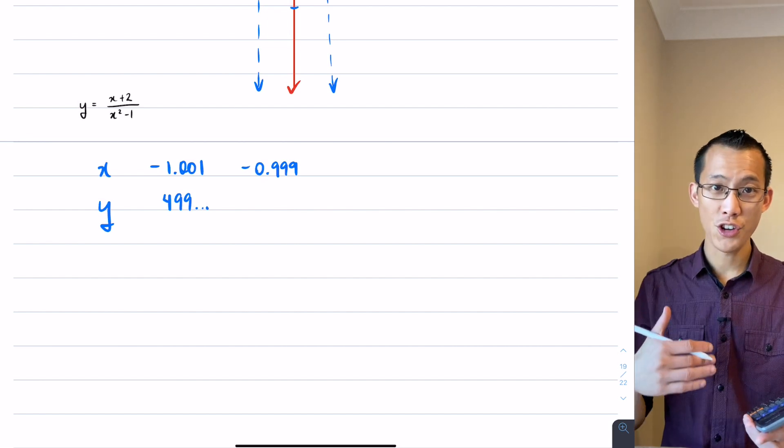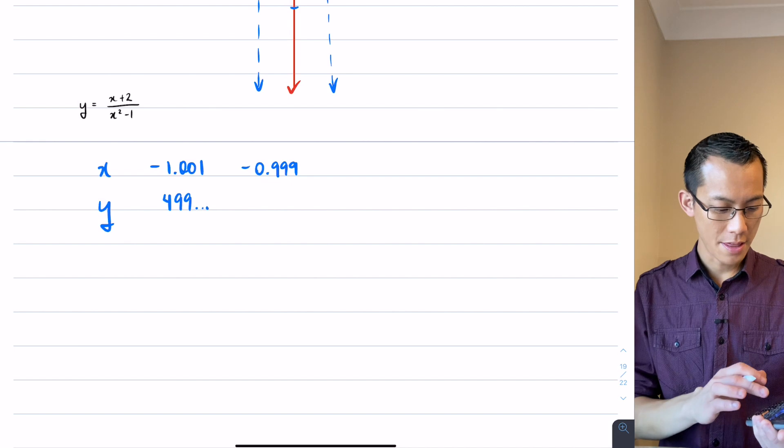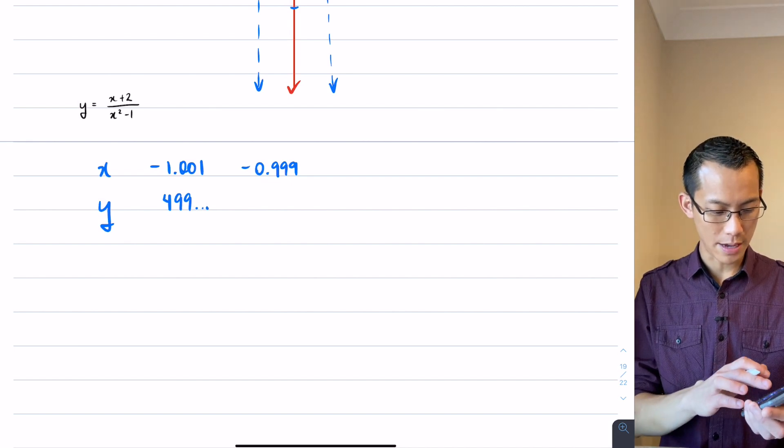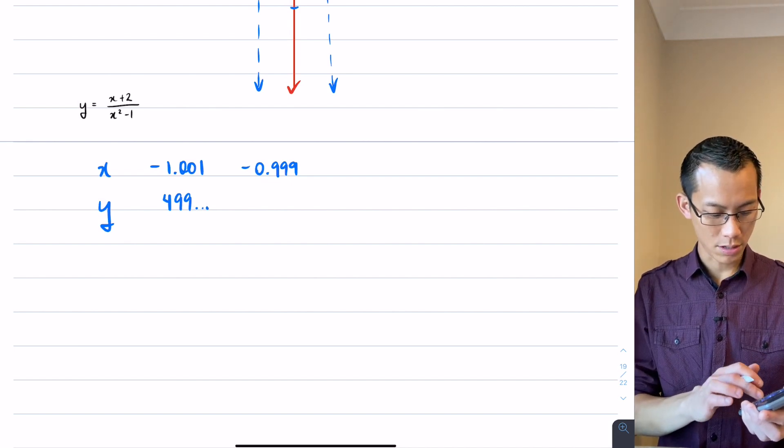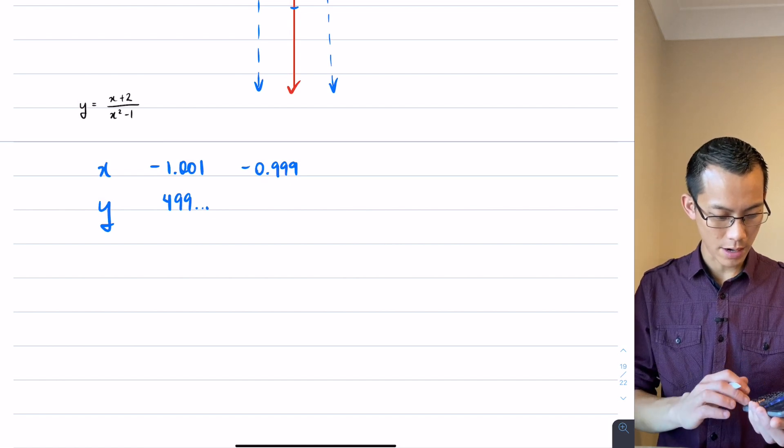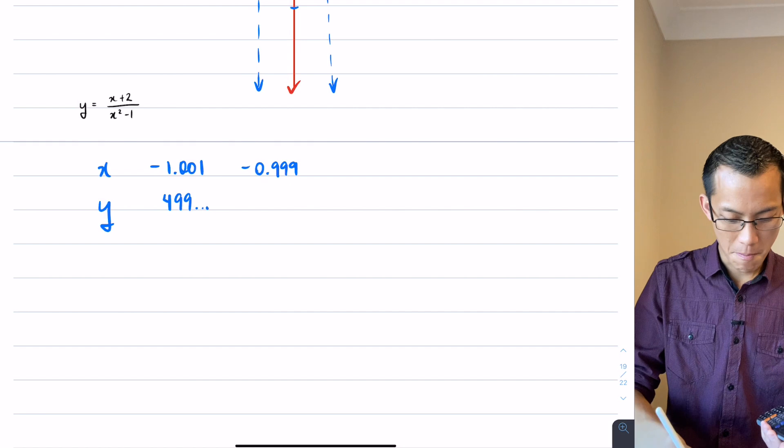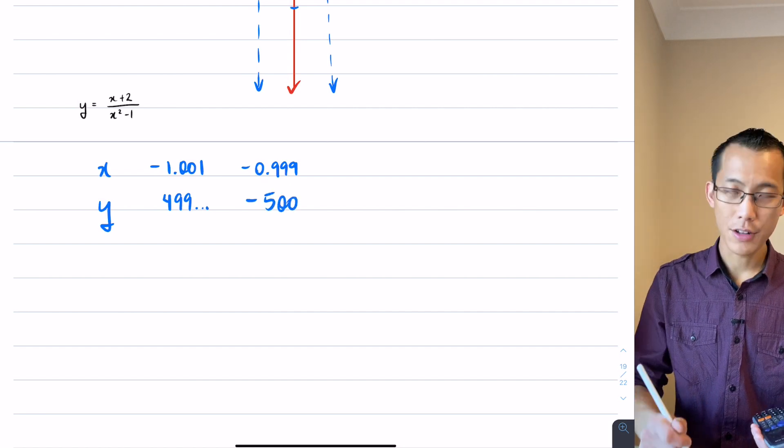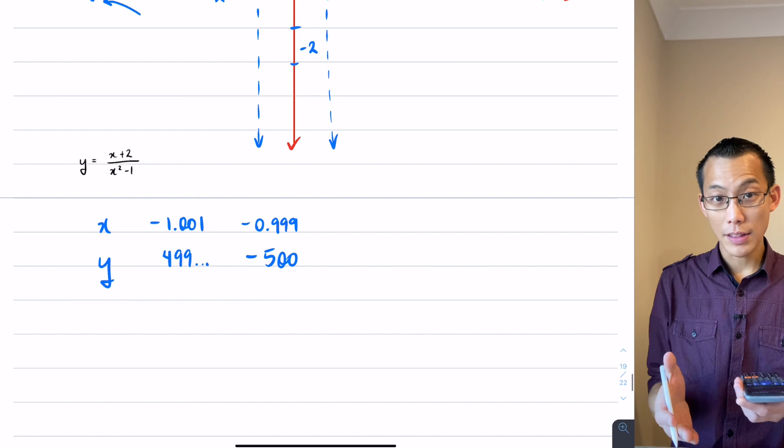And now I'm going to go and put it into the numerator and the denominator. I'm just going to do the same substitution that I did before. So it's going to be x plus 2 on the numerator, x squared minus 1 on the denominator, and I get minus 500.